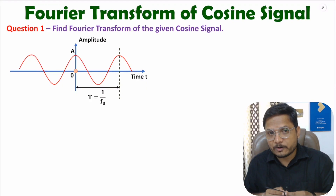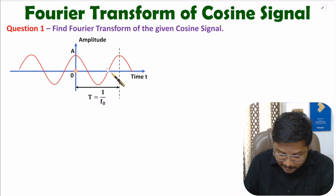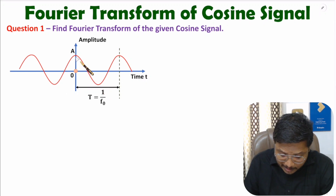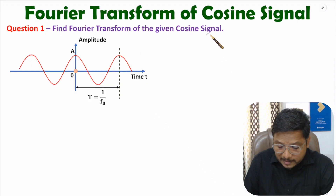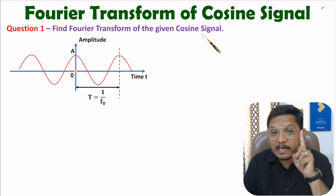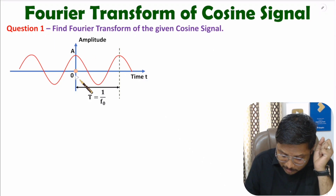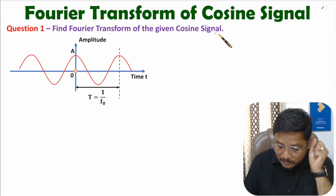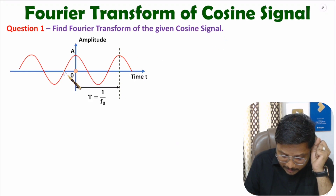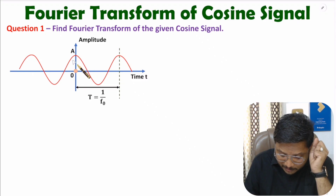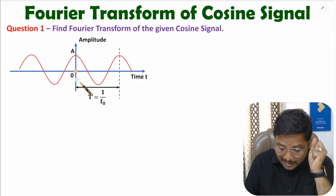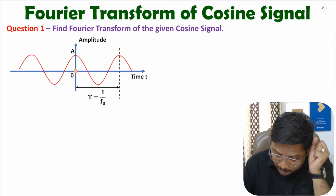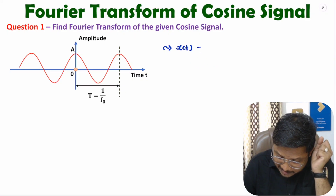First, let me explain how the cosine signal is given. You can observe here we have been given a sinusoidal signal and we need to understand whether this signal is cosine or sine. This signal is starting from maximum amplitude, which means this is a cosine signal. A cosine signal is an even signal — with respect to t = 0, this signal is symmetric, confirming it is cosine. A sine signal would start from zero at t = 0, making it an odd signal.